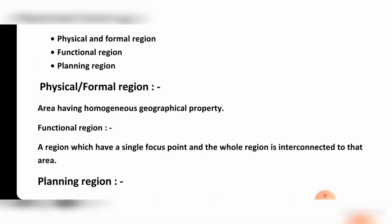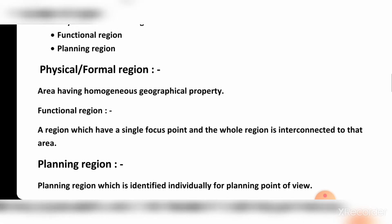A physical and formal region is a homogeneous region — areas sharing the same characteristics. A functional region is a region which has a single focus point and the whole region is interconnected to that area. This region has a single focus point.